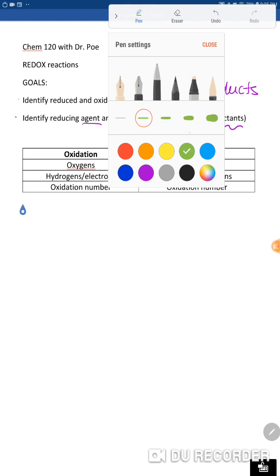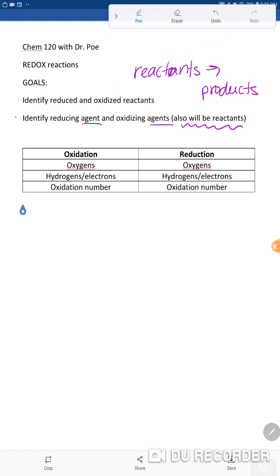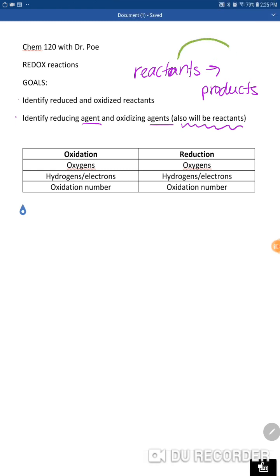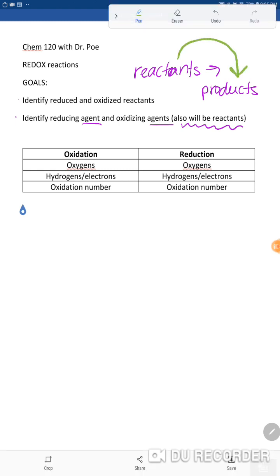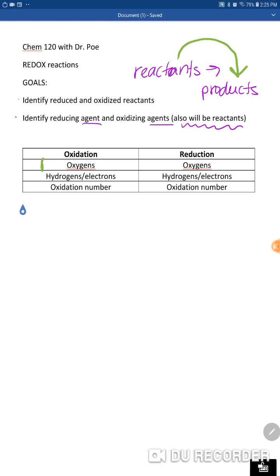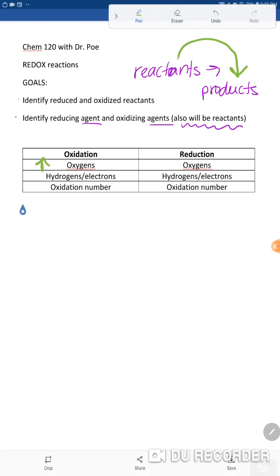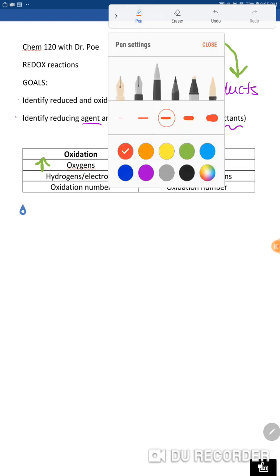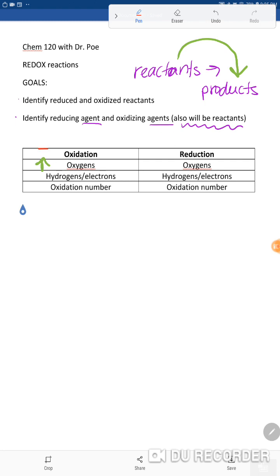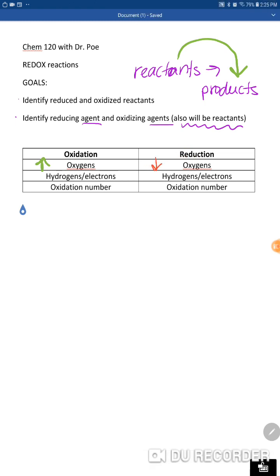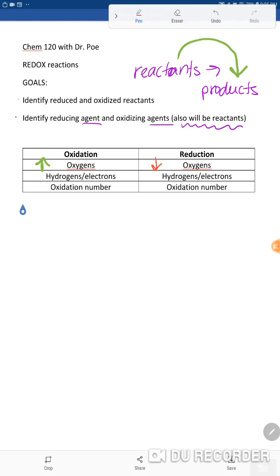So for oxidation, what you're looking for from reactant to product—if that product has an increase in the number of oxygens compared to the reactant, that's considered oxidation. Reduction happens at the same time as oxidation but is really its opposite. So if we see an increase in oxygens in oxidation, as the name kind of implies, in reduction we would expect to see a decrease in the number of oxygens. The products will have fewer oxygens than the reactants.